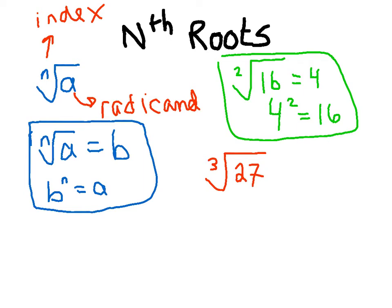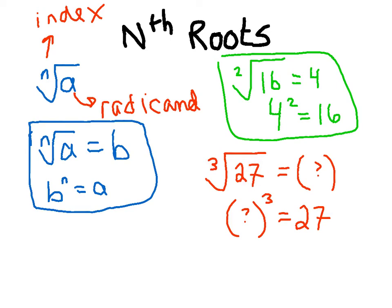Let's do another example: the third root of 27. We're looking for some number such that when we raise it to the third power it equals 27. Let's check: 1³ = 1 — doesn't work. 2³ = 8 — doesn't work. 3³ = 3 × 3 × 3 = 27 — that's it. So the cube root of 27 is 3, because 3 cubed gives us 27.